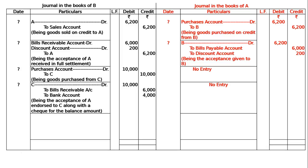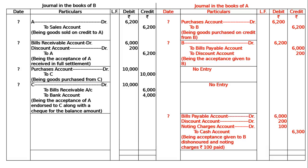On maturity, the bill is dishonored, and noting charges amount to Rs. 100 — C must have paid the noting charges. The entry for dishonor in the books of A will be: bills payable account debited Rs. 6000, the previous discount will be cancelled so discount account debited Rs. 200, noting charges account debited Rs. 100, to B — being the acceptance given to B, dishonored and noting charges Rs. 100 paid by C.